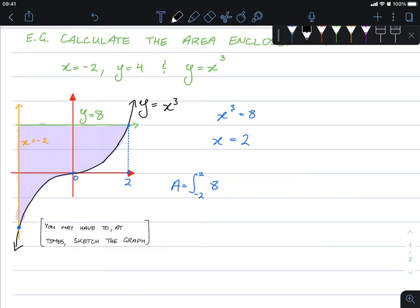So the function is just 8. So we have the function 8 minus the bottom function, and now notice how the cubic is always below the horizontal line up until that point. So that is going to be the bottom function. So x cubed dx.